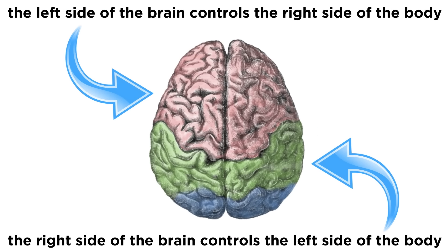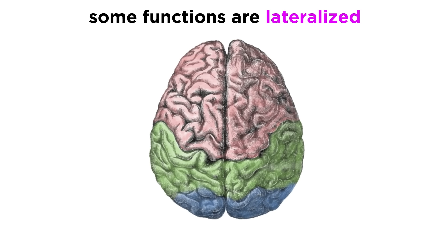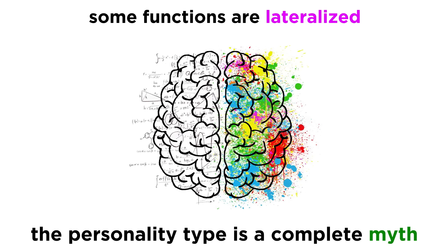Each hemisphere is responsible for the sensory and motor functions of the opposite side of the body, so the left side of the brain controls the right side of the body and vice versa. There are other aspects of the brain that are lateralized, meaning focused more on one side of the cortex than the other, although the whole left brain/right brain personality type is a complete myth.